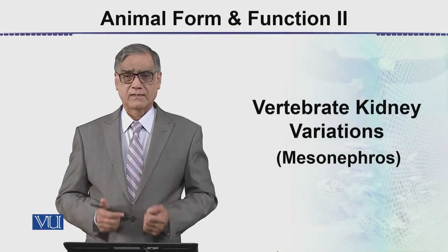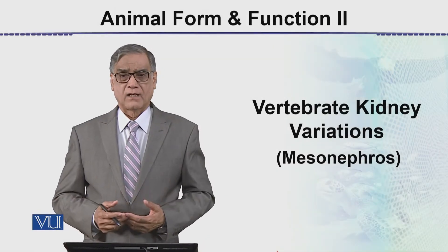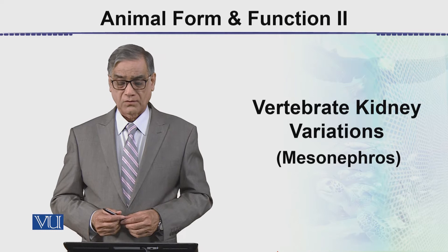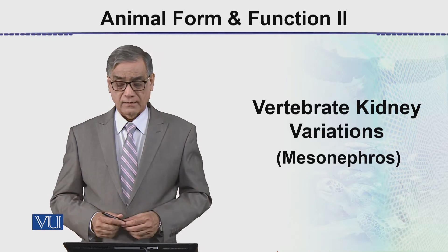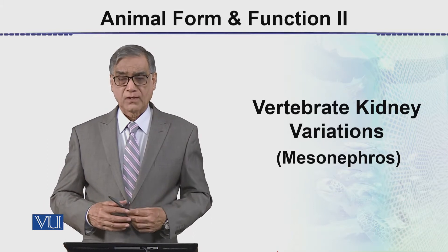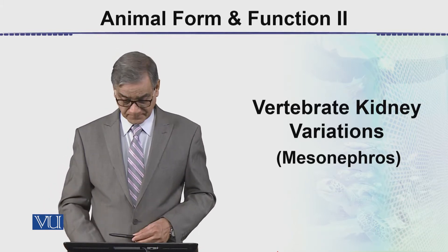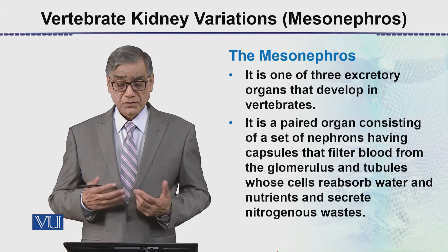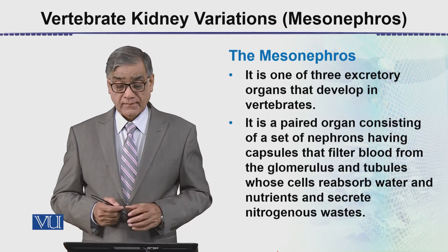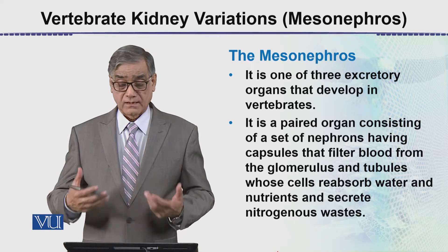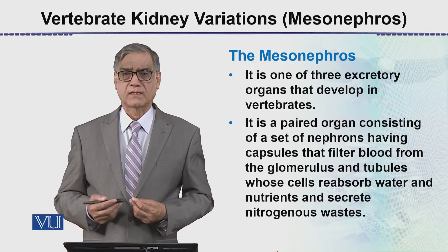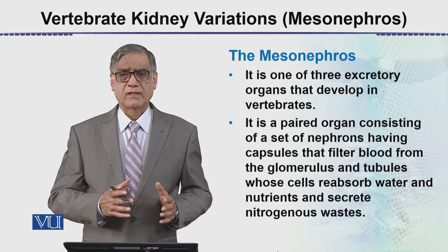We will be studying the next form of the kidney which is the mesonephros. This is under the heading of vertebrate kidney variations, جس کے اندر pronephros, meso اور metanephros کا ذکر ہوگا. Mesonephros کیا ہے — now this is again a paired kidney. It is one of the three excretory organs that develop in vertebrates.